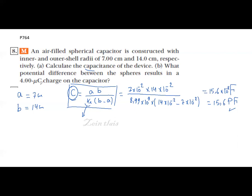Part b: I give you the value of q which is equal to 4 microcoulombs, and I ask you to find the difference of potential between the spheres.